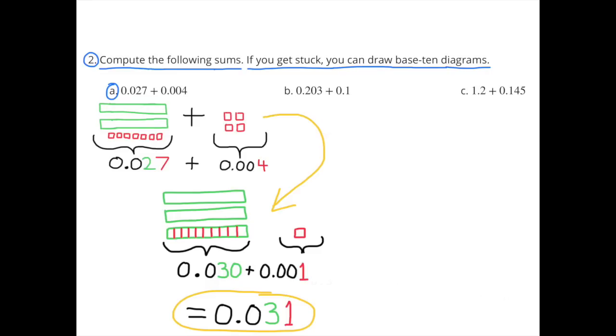27 thousandths plus 4 thousandths equals 31 thousandths. In this diagram, I've combined the 7 thousandths with 4 thousandths totaling 11 thousandths. And I bundled up 10 of those 11 and turned them into 1 hundredth with 1 thousandth remaining. 3 hundredths or 30 thousandths plus 1 thousandth equals 31 thousandths.